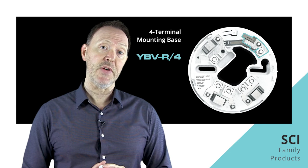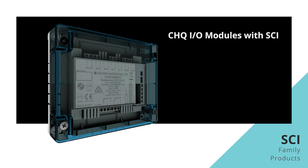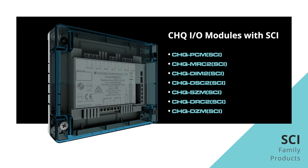Next we have our I/O modules, and there are seven modules in this range that feature an integral SCI. Again, an amber LED will indicate when the isolator has been activated. Each of these modules is designed to perform a specific function within the fire detection system. If you'd like to learn more about these products and where they're best utilized, take a look at our CHQ module explainer videos available right here on our YouTube channel.